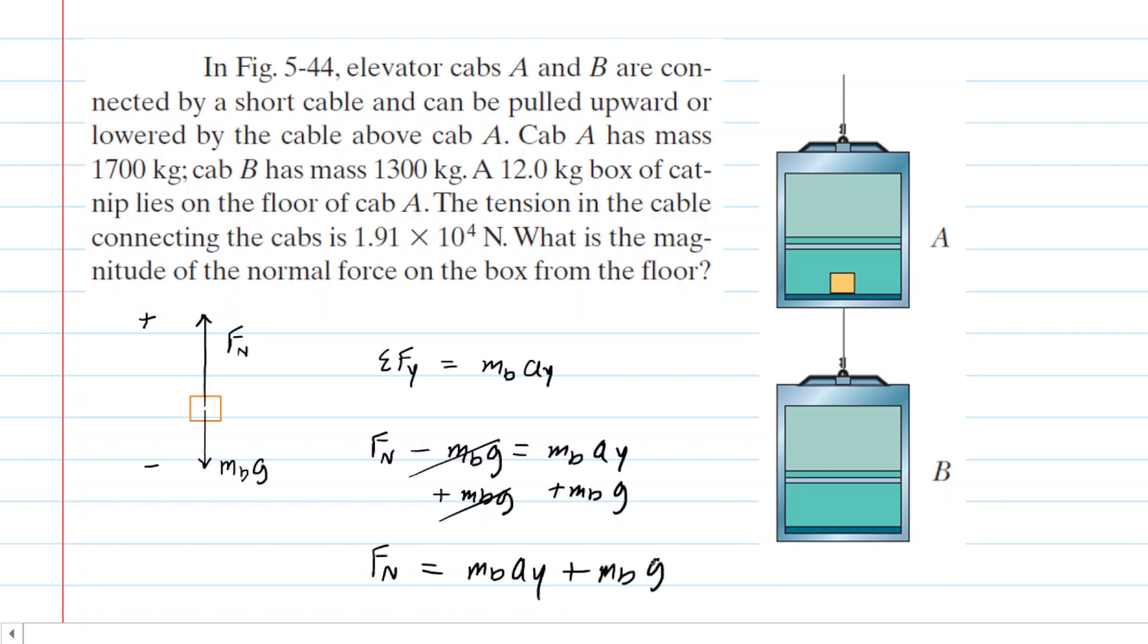Now if we look at the given information we have a little bit of this. We know that the box of catnip has a mass of 12 kilograms, we also know that g is 9.8, but what is missing is the acceleration of the box of catnip.